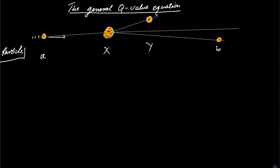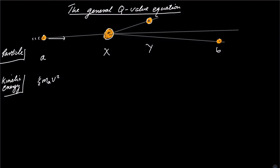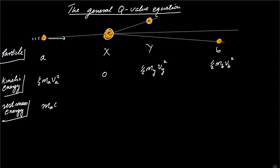What do we know about this system of particles? We can already agree that the kinetic energies will be known. For particle A, the kinetic energy is one-half M_A V_A squared. We assume particle X is at rest, so its kinetic energy is zero. The kinetic energy of the daughter nucleus Y is one-half M_Y V_Y squared, and that of B is one-half M_B V_B squared.